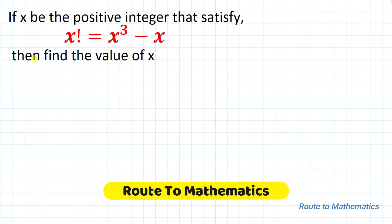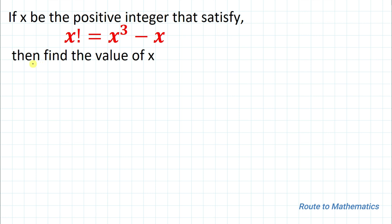Hello everyone, welcome to Root 2 Mathematics. In this video we are going to solve an interesting olympiad question. The given question is: if x is a positive integer that satisfies x factorial equals x cubed minus x, then find the value of x.